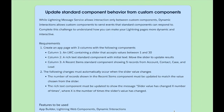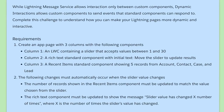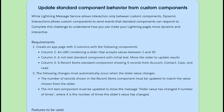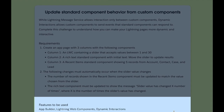Let us now look into the requirements. The first requirement is to create an app page that contains three columns to hold three components. The first component is an LWC component that contains a slider, which should accept values between 1 and 30. The second and third components are standard: one is a rich text component and the other is a recent items component. The features to be used are App Builder, Lightning Web Components, and dynamic interactions.